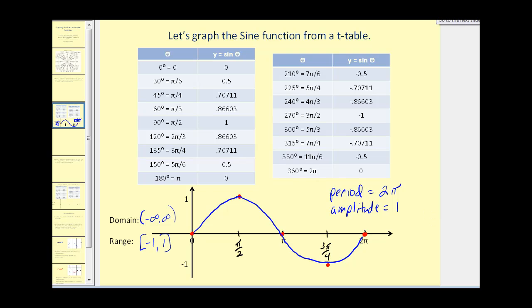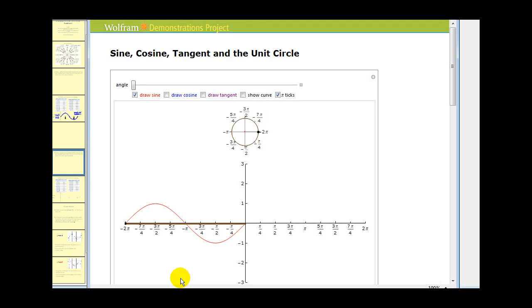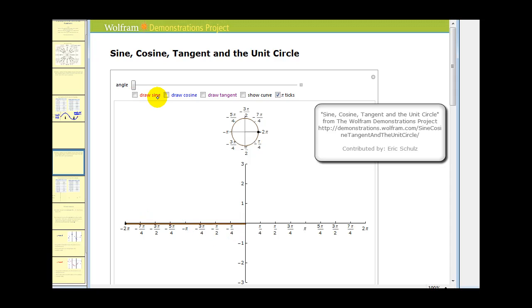Okay, now let's go ahead and take a look at the graph of cosine theta using the Wolfram demonstration. So we'll get rid of the sine function. Remember, cosine theta is equal to x on the unit circle. So now we're looking at the x-coordinate of this point.